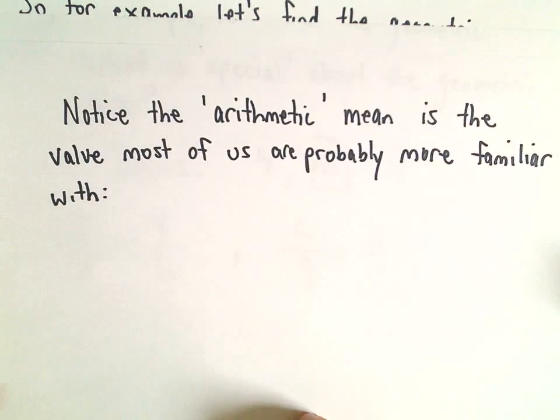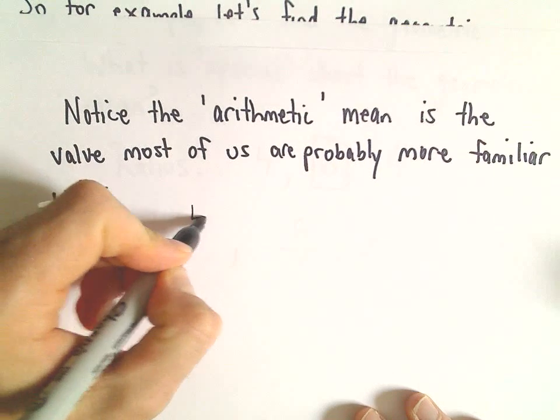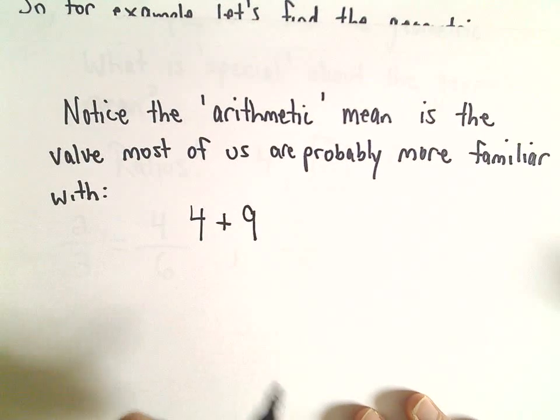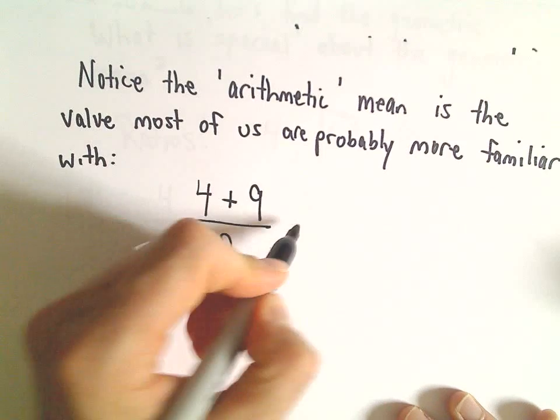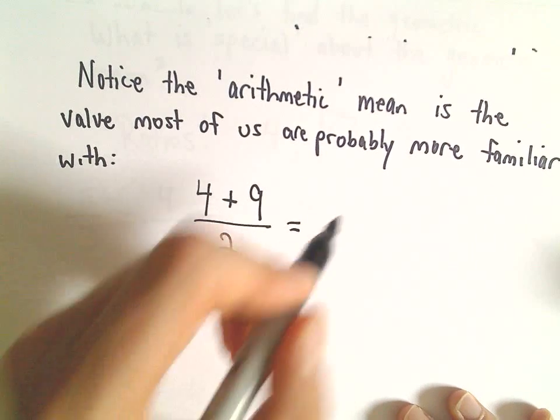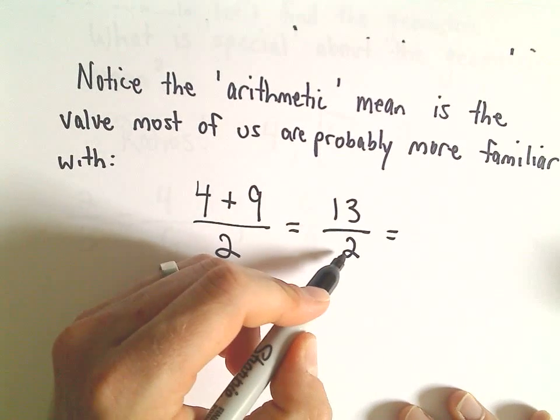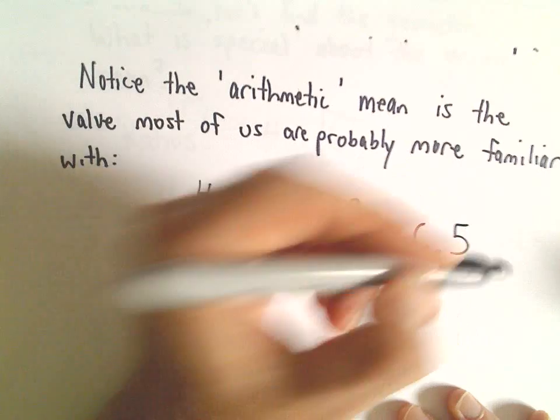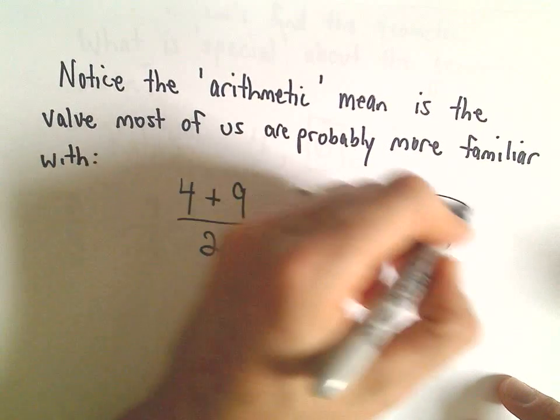The arithmetic mean is the one most of us are more used to. Just to refresh you, the arithmetic mean: we add those two numbers together, 4 plus 9, and then divide by 2. So 4 plus 9, that's 13 over 2. And 13 divided by 2 gives us 6.5. So the arithmetic mean is 6.5, and the geometric mean was 6.